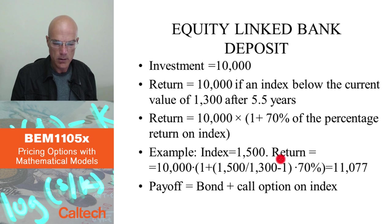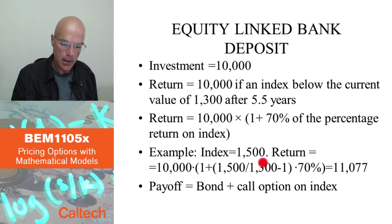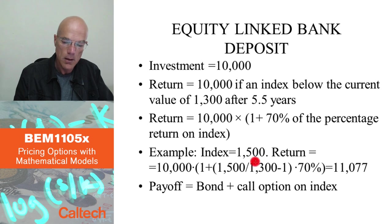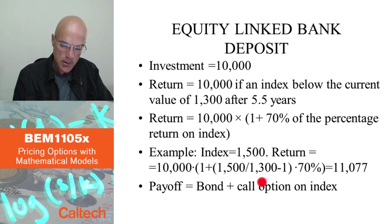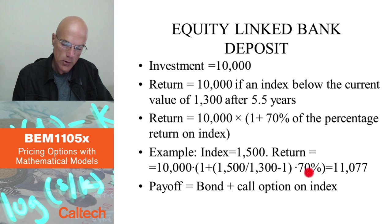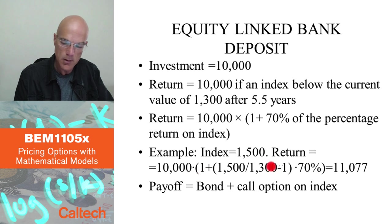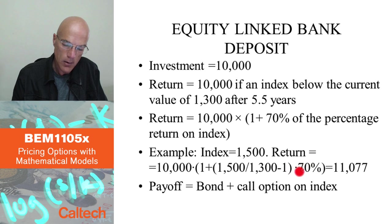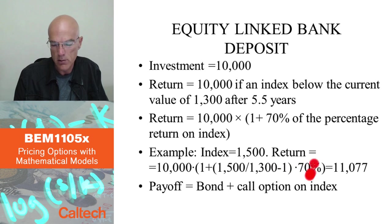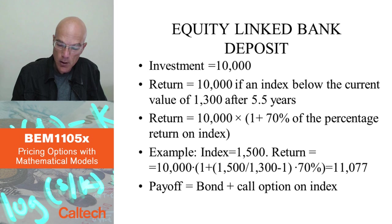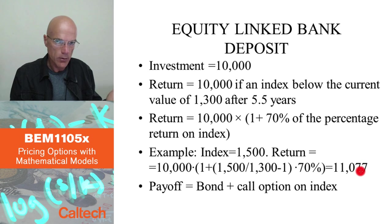To make this clearer with numbers: suppose the index ends up at $1,500 after 5.5 years. Your return would be your initial $10,000 plus $10,000 times the percentage return — which is $1,500 over $1,300 minus 1 — reduced by a factor of 0.7. That interest added to your initial investment comes out to $11,077. So you get some interest back, and that interest depends on how well the index did, reduced by 70%.